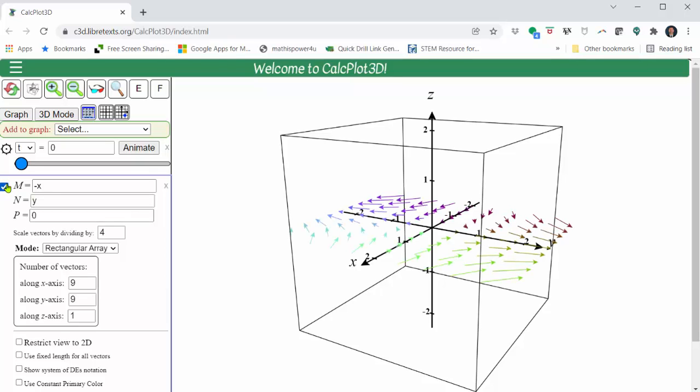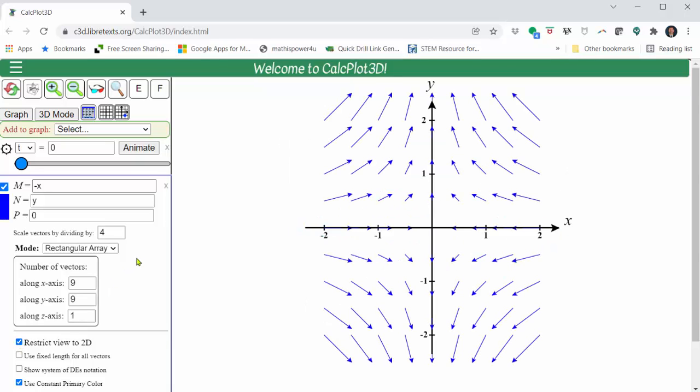And because we have a 2D vector field, let's click the box below to restrict view to 2D. Notice on the right we have a nice graph of the 2D vector field. However, we can customize the graph.